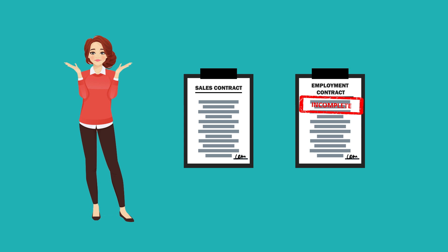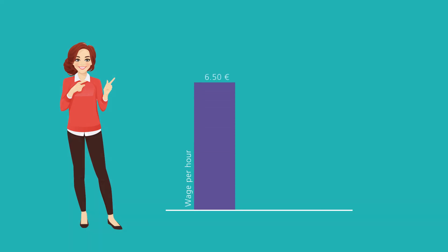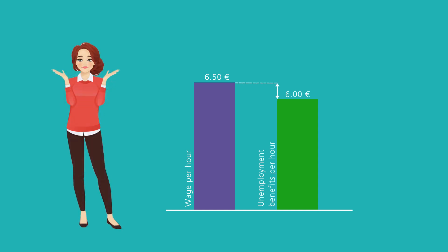When you talk to her, Maria admits that she's only working for Brenda Inc and is not intrinsically motivated, and she justifies her effort with a simple calculation. The difference between her wage and the next best alternative — unemployment benefit — is so small that it's not really worth it for her to work harder. This difference is called the employment rent. The lower the employment rent, the less you stand to lose if, for example, you are laid off.